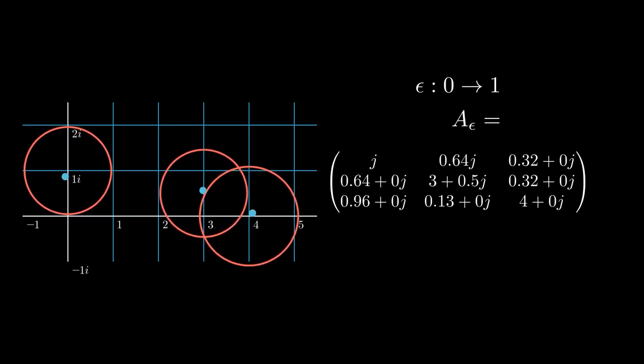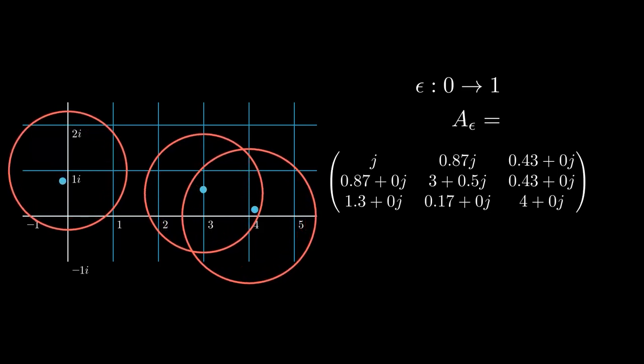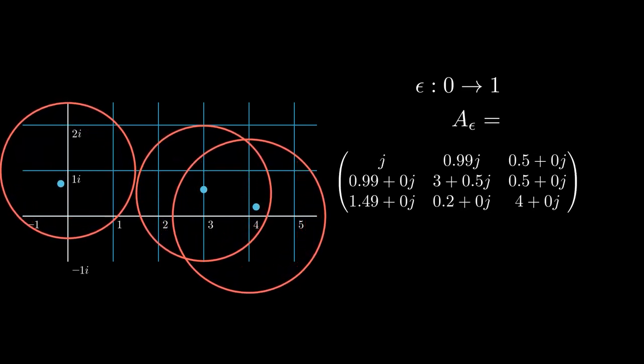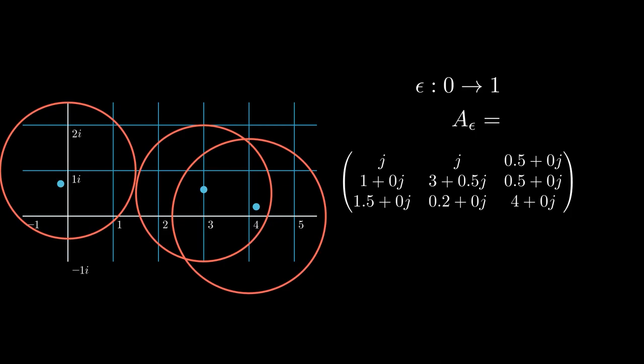When epsilon grows to 1, we have our matrix A back, and the same things hold true. So a connected component of G of A with k disks must contain exactly k eigenvalues.